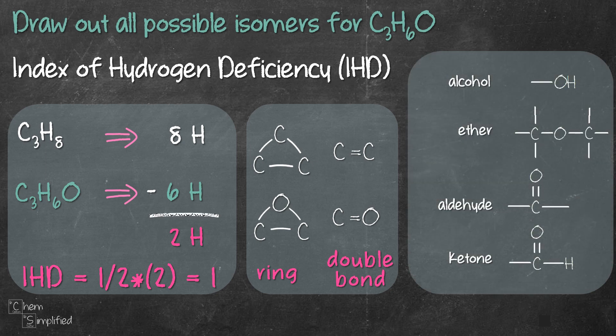Here are the 4 functional groups we'll be working with. Another thing to keep in mind is the number of bonds each atom normally makes: hydrogen makes 1 bond, oxygen makes 2 bonds, and carbon makes 4 bonds. We're now ready to draw out all our isomers for C3H6O.